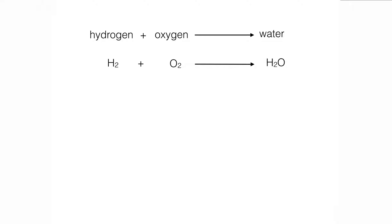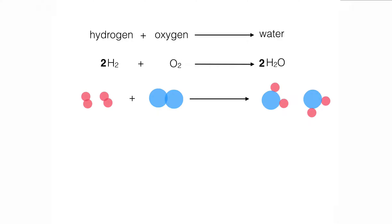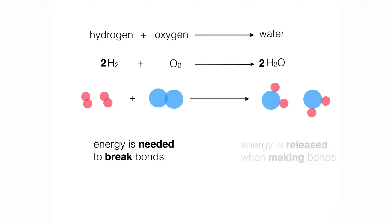We've got hydrogen and oxygen reacting to give water. There's the balanced formula equation for that reaction. We can also take a look at what's happening in terms of the particles, the atoms, and the molecules in this reaction. We can see we have two molecules of hydrogen reacting with one molecule of oxygen to make two molecules of water. A key and important thing to know here is that energy is needed to break bonds in the reactants, and energy is released when making bonds in the products.